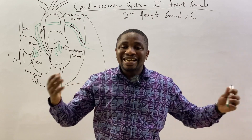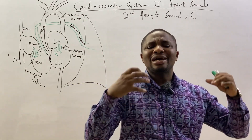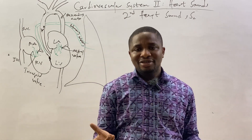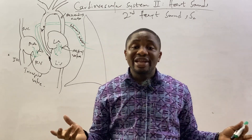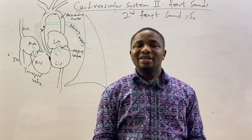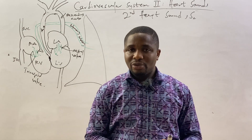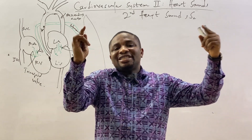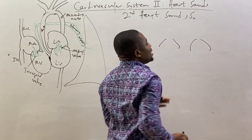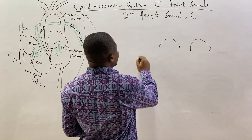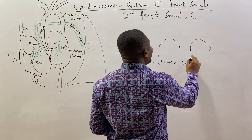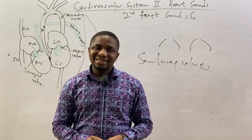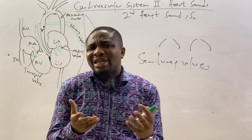The second heart sound is produced as a result of the closure of the aortic valve and the pulmonary (pulmonic) valve. The aortic valve and the pulmonic valve together are collectively known as the semilunar valves — because of their half-moon shape, as discussed in part one. The closure of the semilunar valves gives rise to the second heart sound.